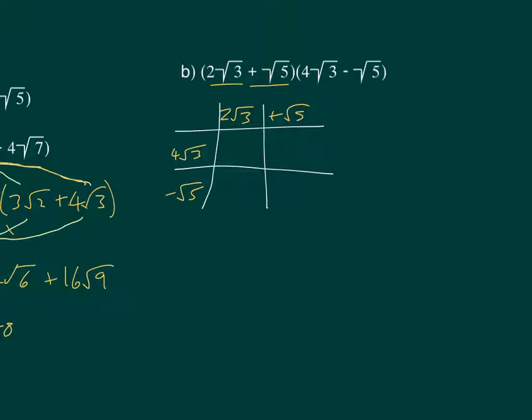So let's multiply these together. We're going to have 2 times 4 is 8, 3 times 3 is 9, so 8 root 9. Here we're going to have 4 root 15. This one is going to be minus 2 root 15. And then in the last one, minus root 5 times root 5 is going to be minus root 25.